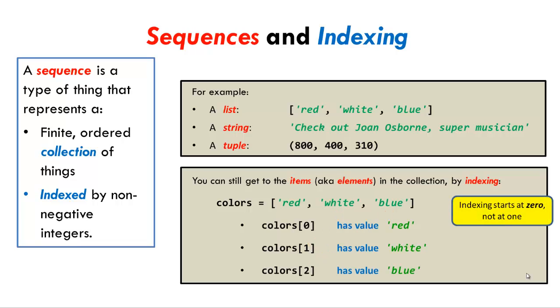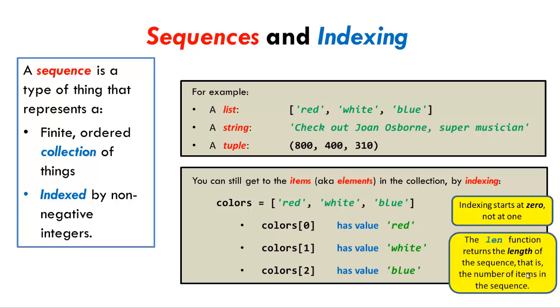Note that indexing starts at zero, not at one. And the len function — L-E-N — returns the length of the sequence, that is, the number of items in the sequence.